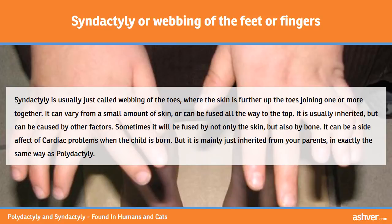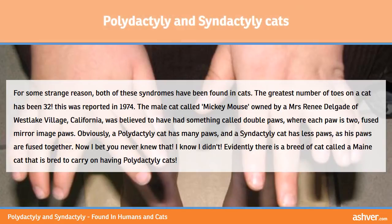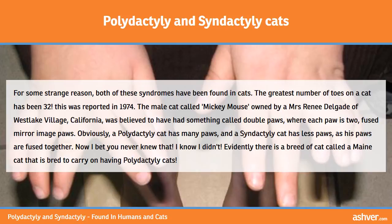Syndactyly is mainly just inherited from your parents, in exactly the same way as polydactyly. For some strange reason, both of these syndromes have been found in cats. The greatest number of toes on a cat has been 32 — this was reported in 1974. The male cat called Mickey Mouse, owned by a Mrs. Renee Delgade of Westlake Village, California, was believed to have had something called double paws, where each paw is two fused mirror-image paws. Obviously, a polydactyly cat has many paws, and a syndactyly cat has fewer paws as its paws are fused together. Now I bet you never knew that — I know I didn't.